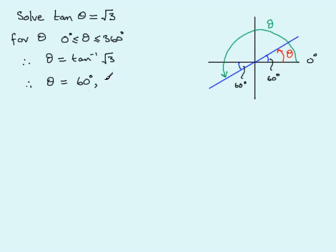So the green theta is 240°. For theta between 0° and 360°, the solutions are theta = 60° and theta = 240°. In questions you won't always be asked for theta between 0° and 360° — there are other ranges.